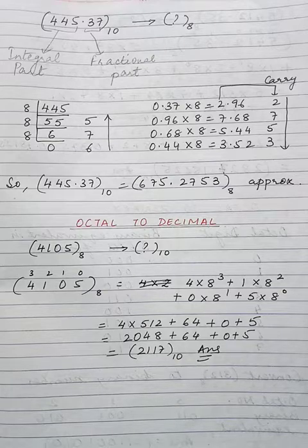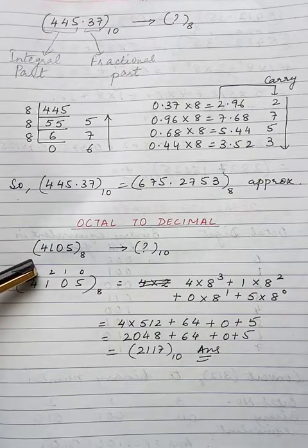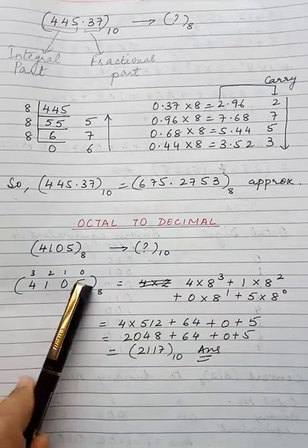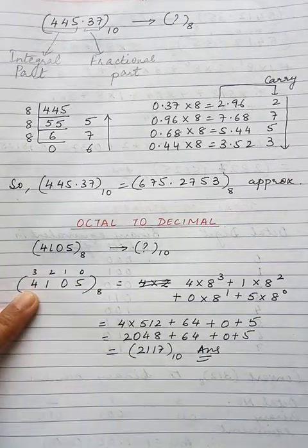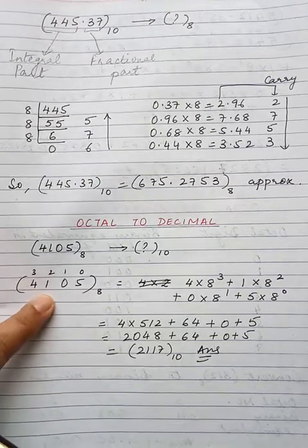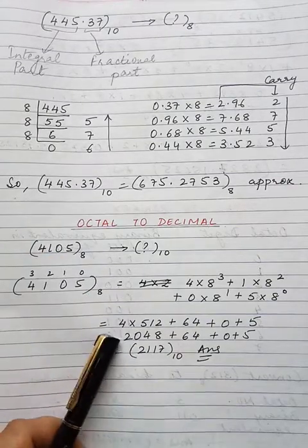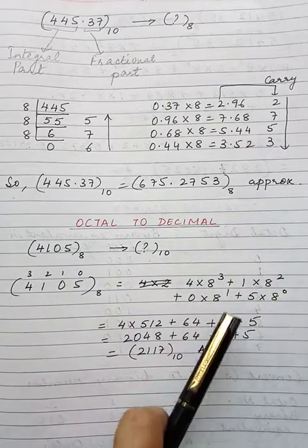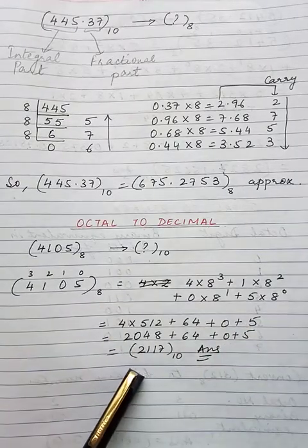Next comes the conversion of octal to decimal. 4105 is an octal number to be converted into its decimal equivalent. First we write the position values starting from 0 on the right: 0, 1, 2, 3. Then we multiply each digit by 8 raised to the corresponding power: 4 × 8³ + 1 × 8² + 0 × 8¹ + 5 × 8⁰. Since 8³ = 512, we get 4 × 512 = 2048, plus 64, plus 0, plus 5. When we add all this we get the answer 2117 base 10.